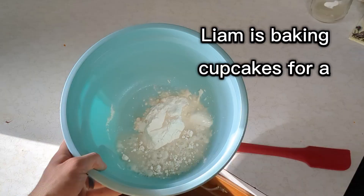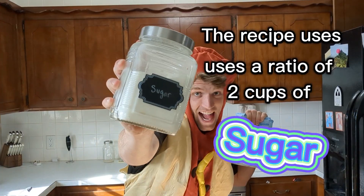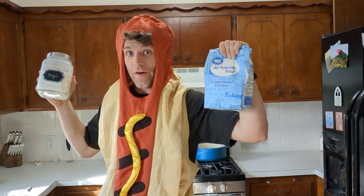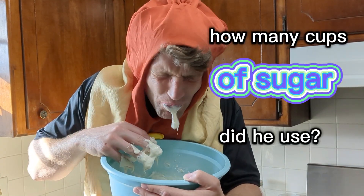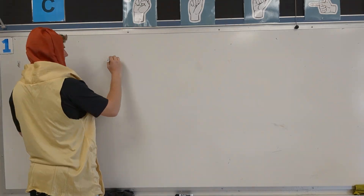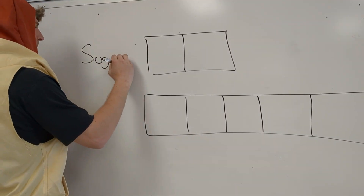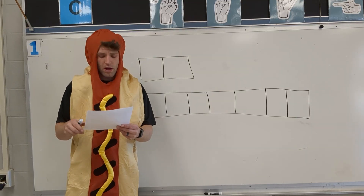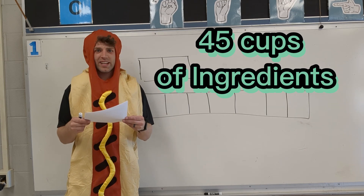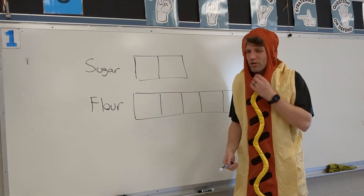Liam is baking cupcakes for a school fundraiser. The recipe uses a ratio of 2 cups of sugar to 7 cups of flour. If Liam uses 45 cups of ingredients, how many cups of sugar did he use? Step 1: we have to make our tape diagram. We see 2 cups of sugar for 7 cups of flour. But our word problem just says they used 45 cups of ingredients. We have to find what do we connect our 45 cups of ingredients to — our sugar or our flour?